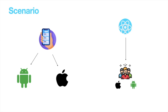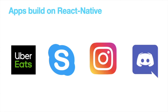Now consider a scenario where you have React Native. In this case you don't need to hire two teams — one for Android and one for iOS. You can hire just one team with knowledge of React Native, and with a single code base you can develop apps for both platforms. If something new comes up, you can write a single code base to achieve it across both apps. There are some famous apps built on React Native, like Skype, Instagram, and Discord.